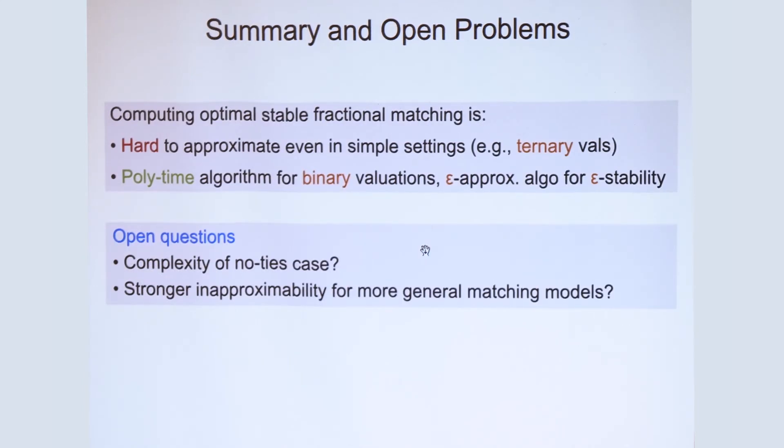So in summary, I told you that the computational problem for finding optimal stable fractional matchings is hard, even in very simple settings, like ternary valuations. But it is possible to give polynomial time algorithms for simpler settings, such as binary valuations, or for epsilon stability matchings.